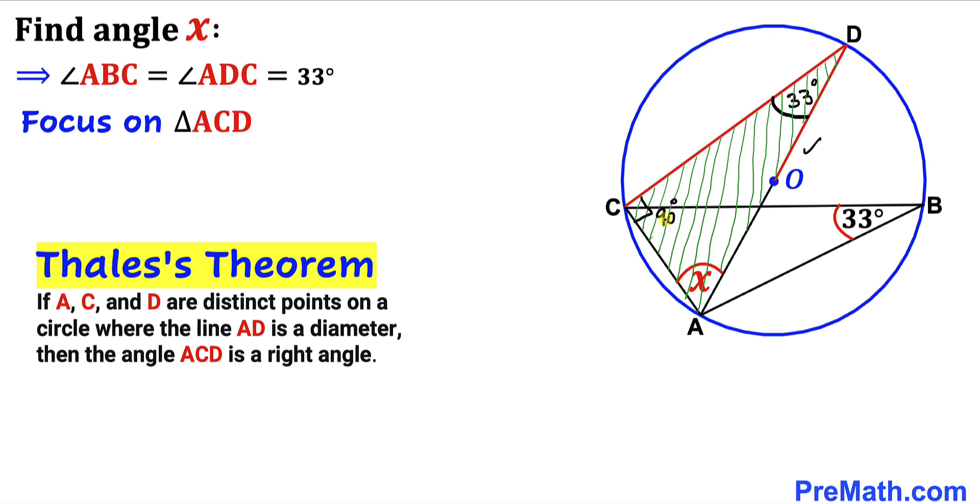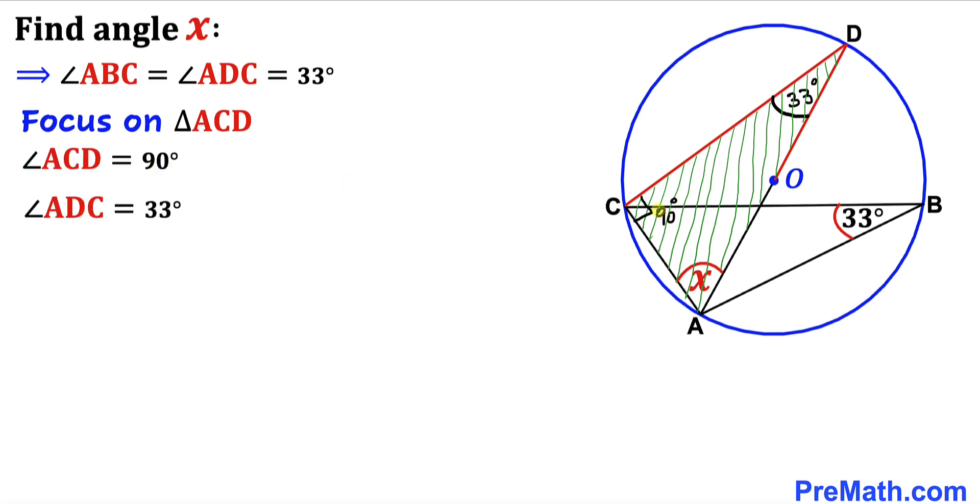Angle ADC is 33 degrees, as you can see. Now let's recall the triangle sum theorem: the sum of three interior angles in triangle ACD equals 180 degrees. So let me write down: angle x plus 90 degrees plus 33 degrees equals 180 degrees.